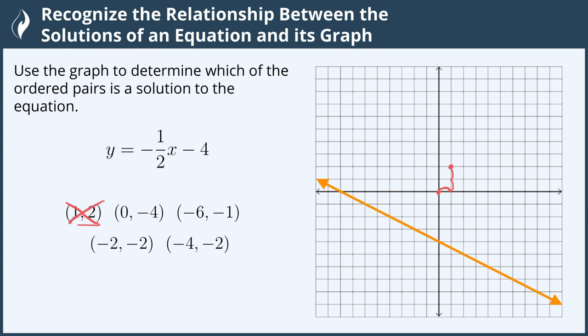Let's try the next one, (0, -4). We start at the origin again and we move in the x direction zero places to the left or right, and so we just move down four units — one, two, three, four — and here's our point. It does lie on the line, so the ordered pair (0, -4) is a solution to our equation.